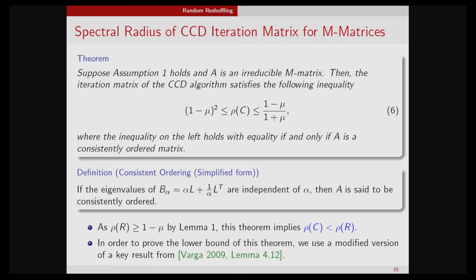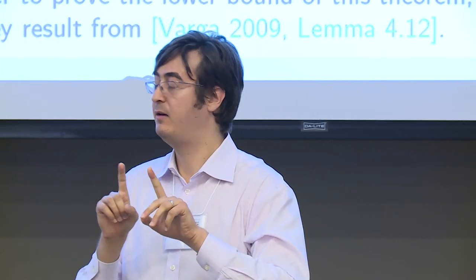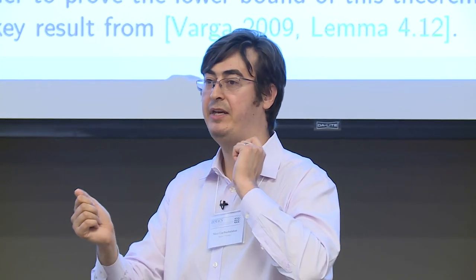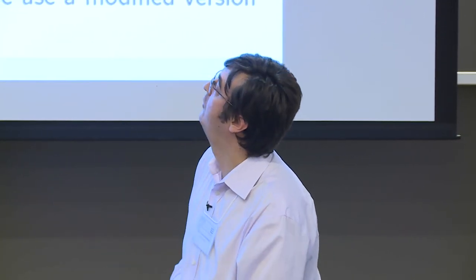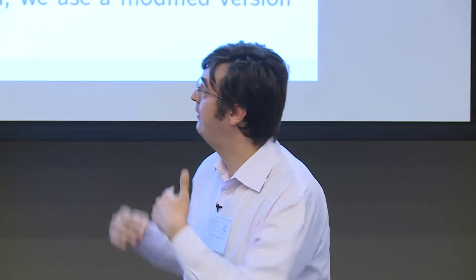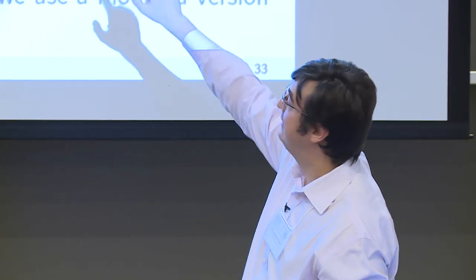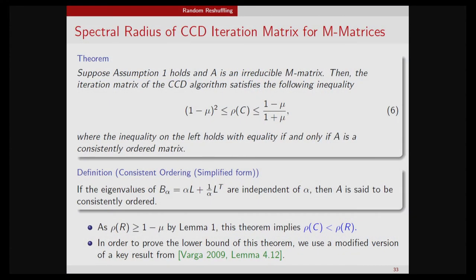There is a characterization of the order that achieves the lower bound. The order must be consistently ordered — meaning if you think of A as a graph, the graph should be bipartite, and your updates should alternate between the two sides in a left-right fashion. This gives a characterization of the best order in cyclic coordinate descent, though computing it requires some approximation algorithms — ongoing work.